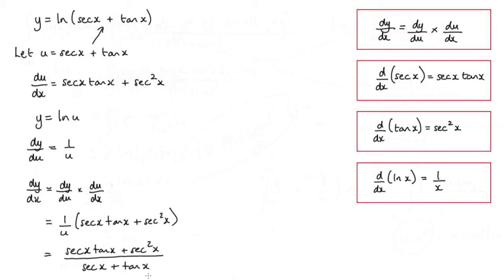Now this will actually simplify a little bit further. If you notice, we've got a factor of sec x here. So what we have is sec x times (tan x + sec x), all over sec x + tan x.